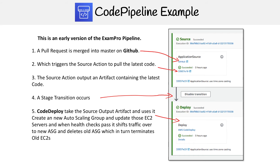Then a stage transition is going to occur, and CodeDeploy is going to take that source output — the output artifact from the first step — and use it to create a new auto scaling group, then update the EC2 servers with that artifact.